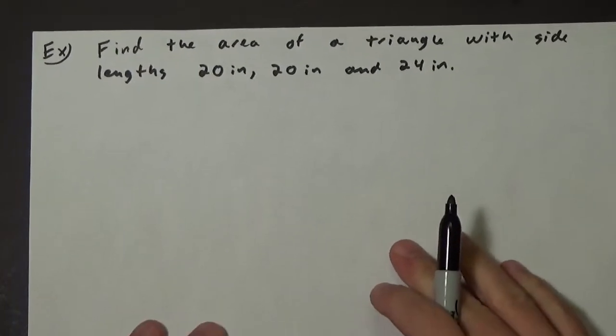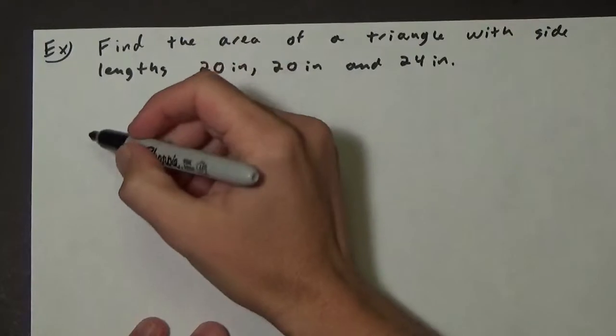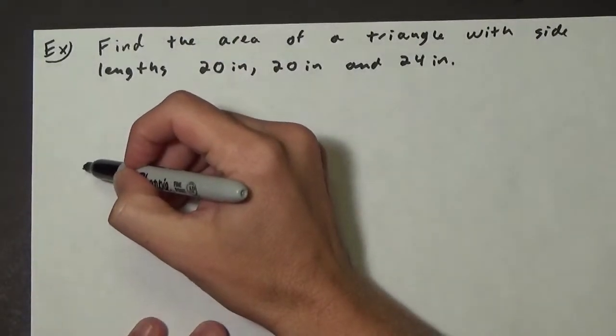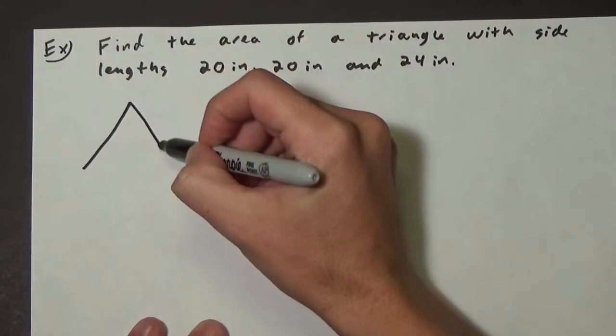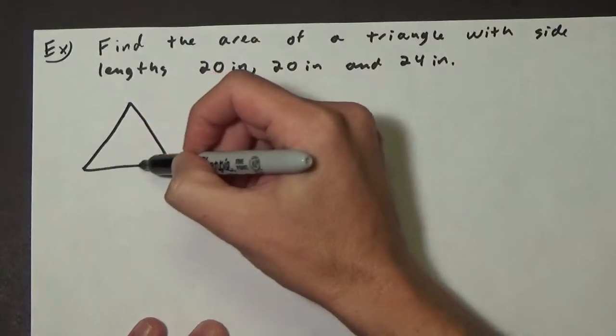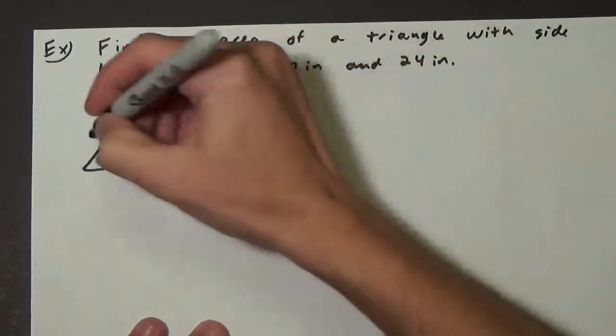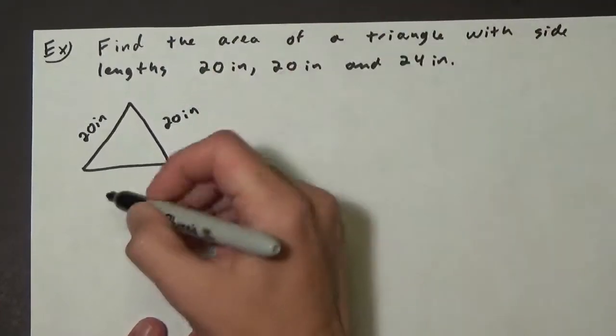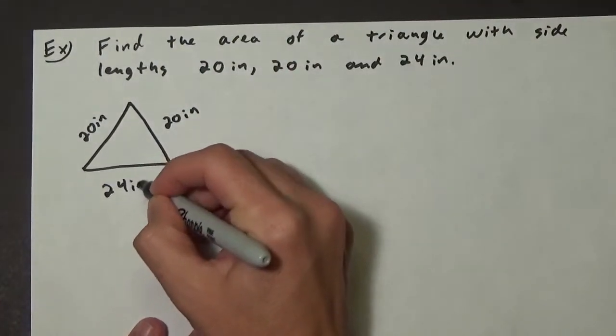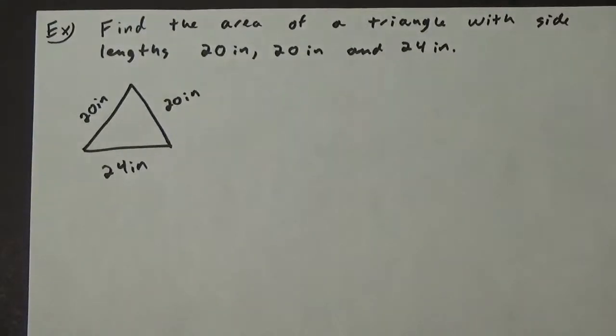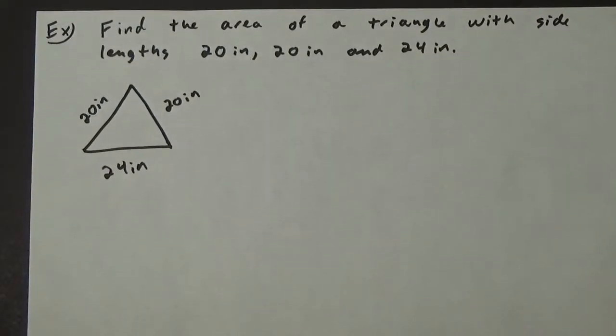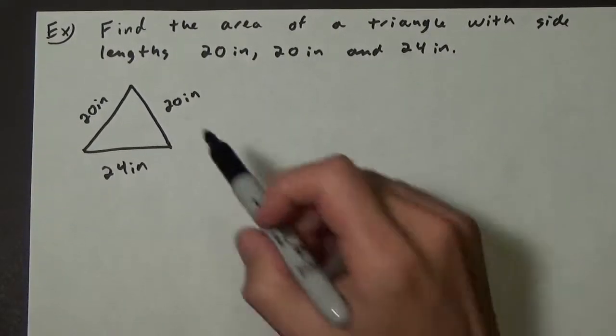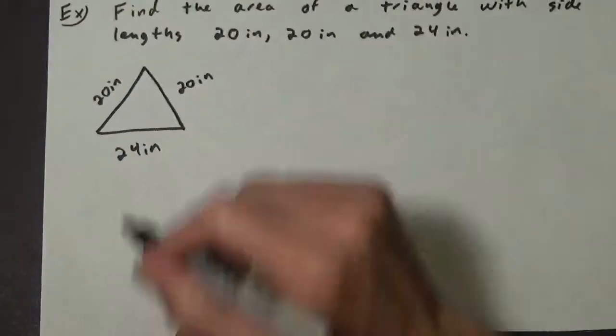go ahead and sketch a picture of what's going on. So let's say this is 20 inches, this is 20 inches, and this is 24 inches. There's our triangle. Now, because we have two side lengths that are the same,